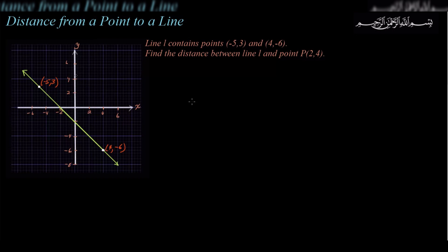Here's a Cartesian plane where each little box represents increments of 2 — so 2, 4, 6, and negative 2, negative 4. The point negative 5, 3 is plotted here, and 4, negative 6 is plotted over here. Those are the two points on line L, and I've connected those two dots to give us line L. That's the first part of the statement.